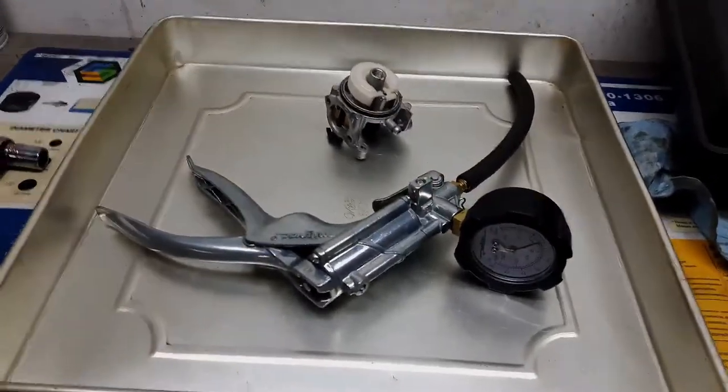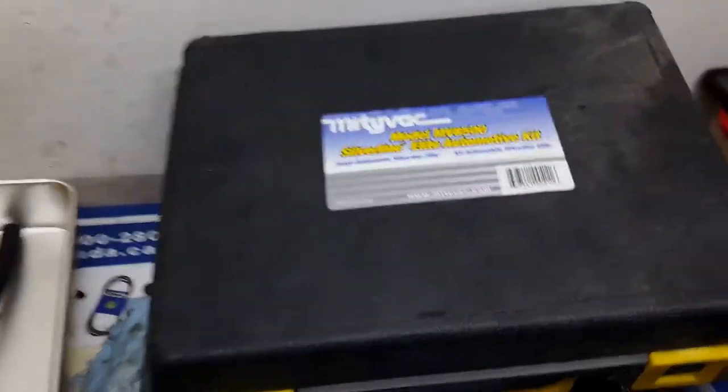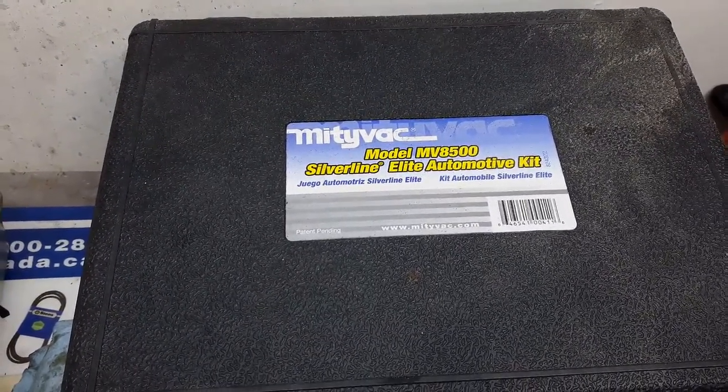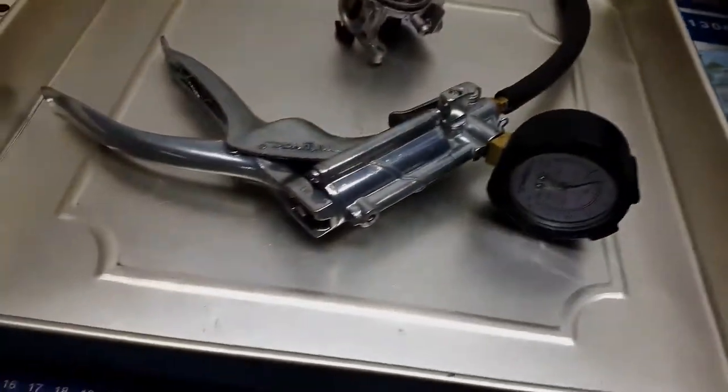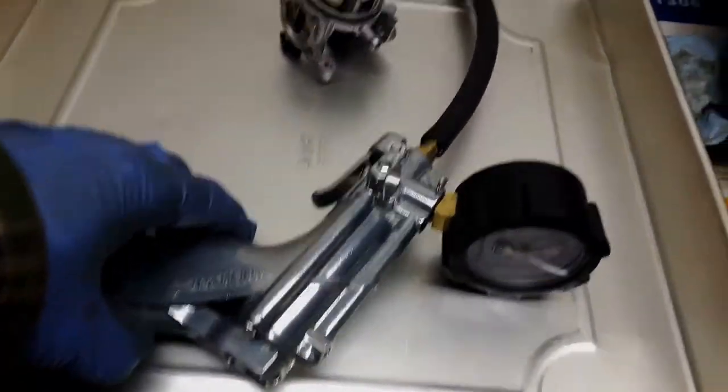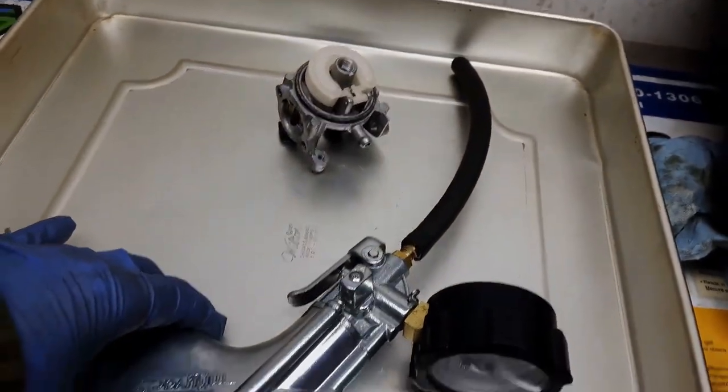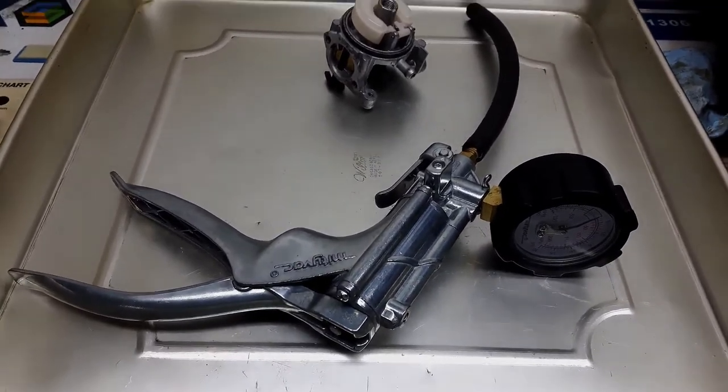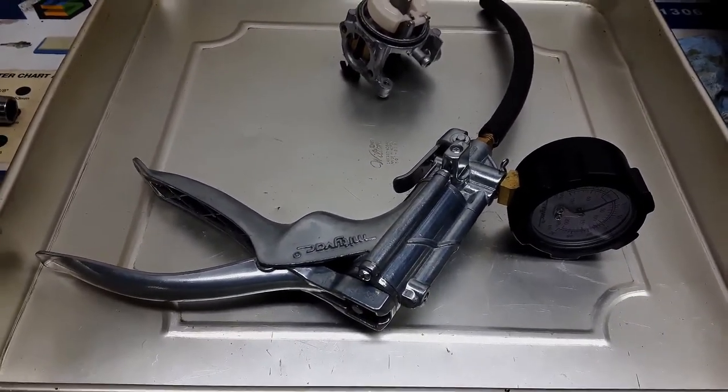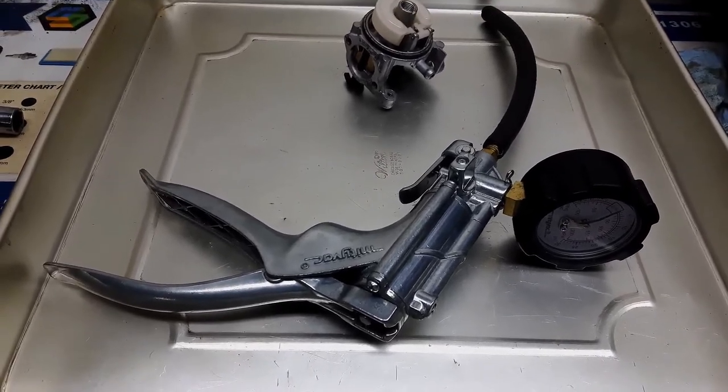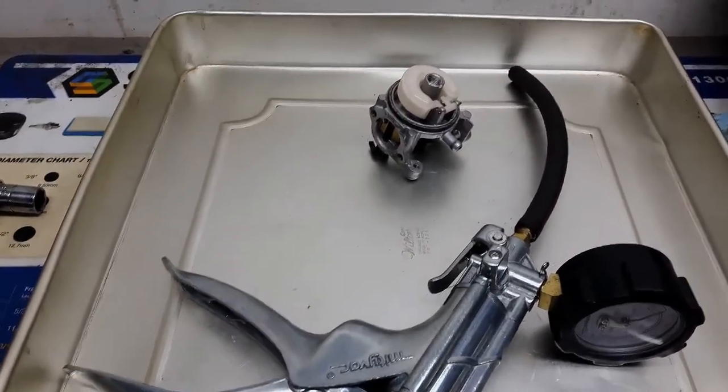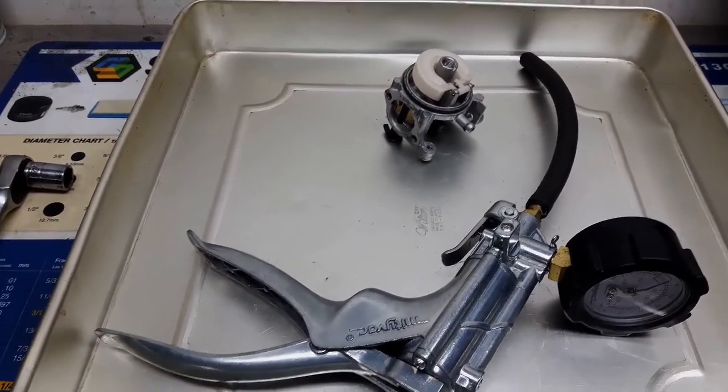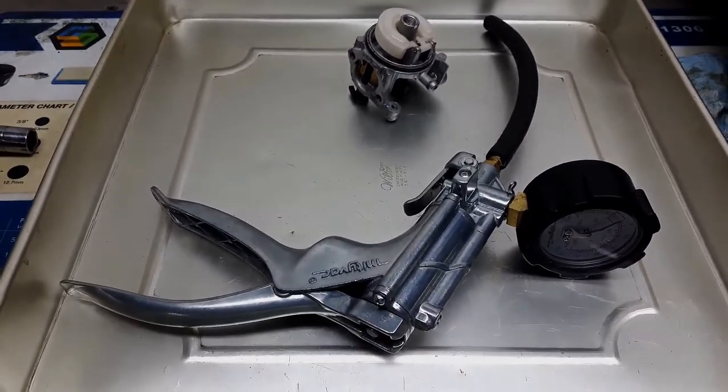So what I have here is a MightyVac MV8500. It's basically a pressure and vacuum instrument with a piece of fuel line on it and this kit unfortunately is a little on the expensive side, probably a little over $100 here in Canada, but it has helped me numerous times to diagnose a faulty needle and seat. So I'm going to show you how to do that today in today's quick tip.